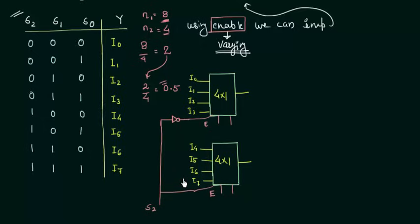Let's see what is the advantage of doing this. For the first 4 cases, S2 is 0. So let's consider the first 4 cases when S2 is equal to 0. By doing this, this multiplexer will not work. Why? Because the enable is low, and when enable is low the output is always equal to 0.